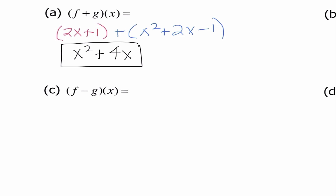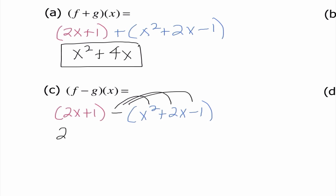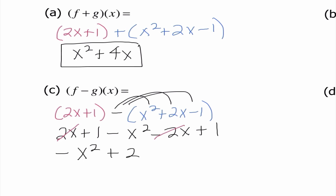For part c, it's asking us to find f minus g of x. So I'm going to do 2x plus 1 minus x squared plus 2x minus 1. The very first thing I need to do is distribute this negative: 2x plus 1 minus x squared minus 2x plus 1. So I have negative x squared, the x terms cancel each other out, and adding the ones gives plus 2. So negative x squared plus 2 is our final answer.